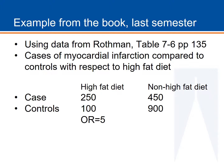This slide shows an example of misclassification from Table 7-6 on page 135 from the Rothman book used in epidemiology. The 2x2 table is showing the example of an odds ratio table comparing cases and controls in terms of their reported fat intake. Of the 700 cases, 250 have a high fat diet and 450 do not. Of the 1,000 controls, only 100 have a high fat diet and the remaining 900 do not.